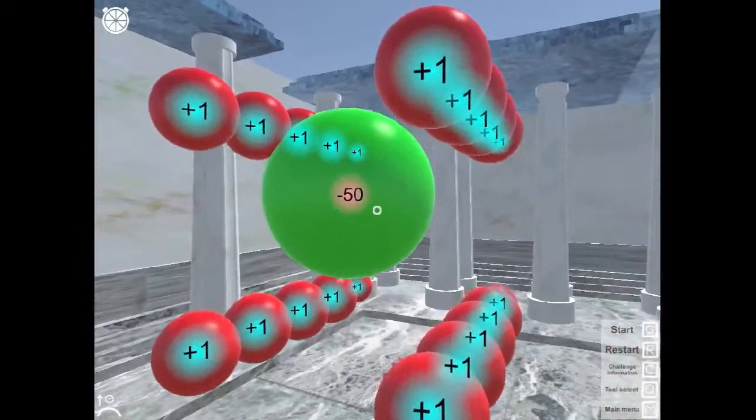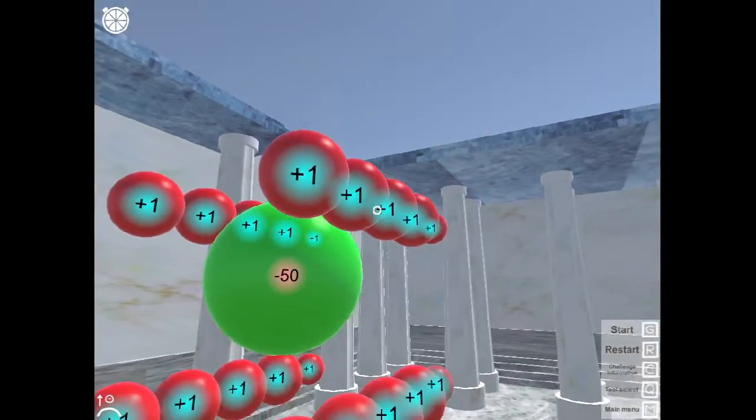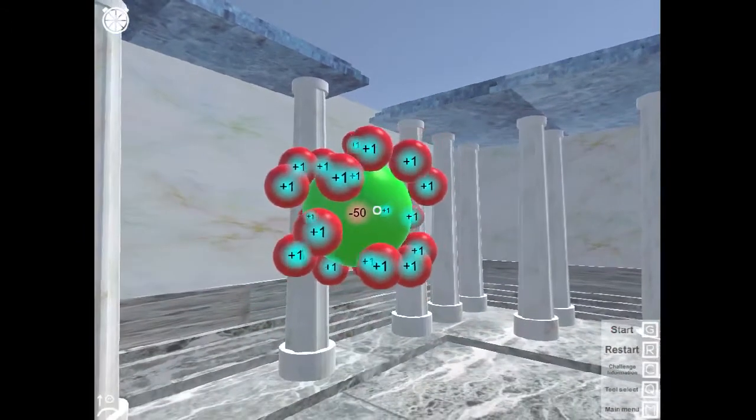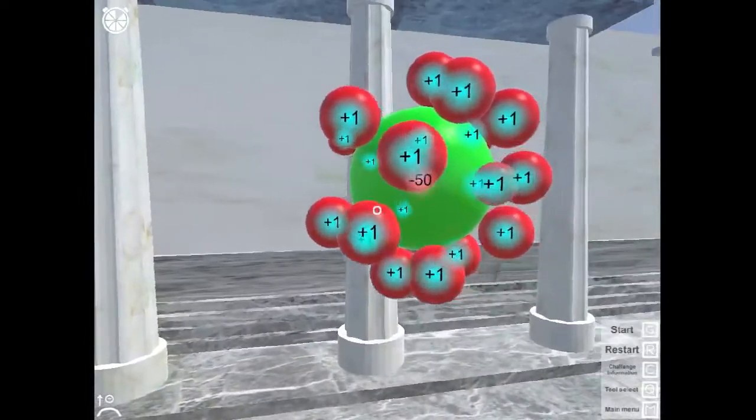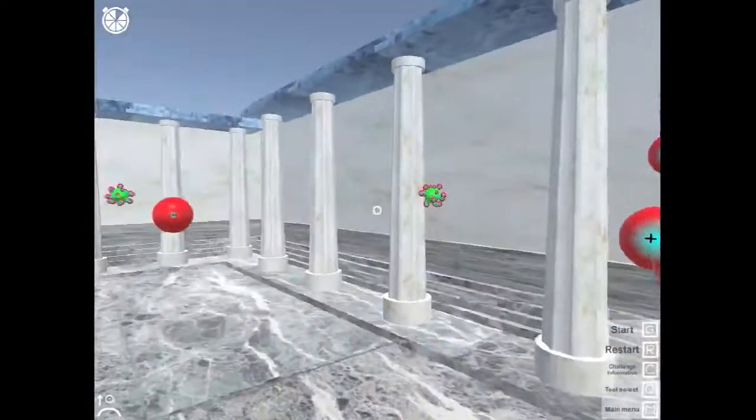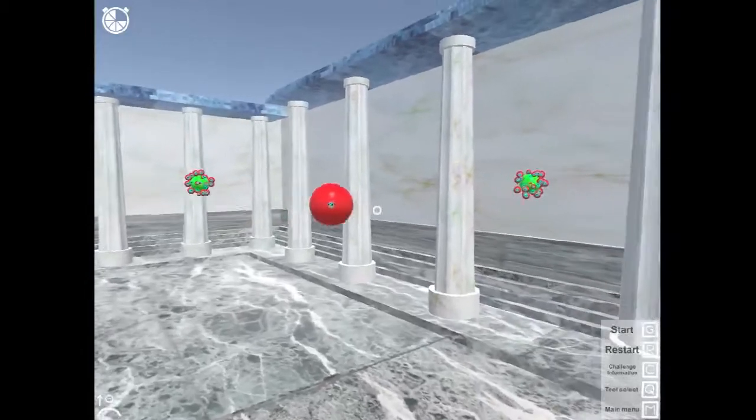The numbers you see here are the charges on each ball, and the larger balls have more mass. So when they come into contact, the inverse square law overpowers the little red ones, and they're pushed away from that big red one.